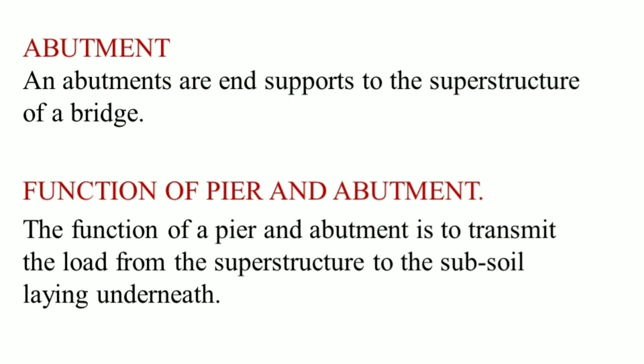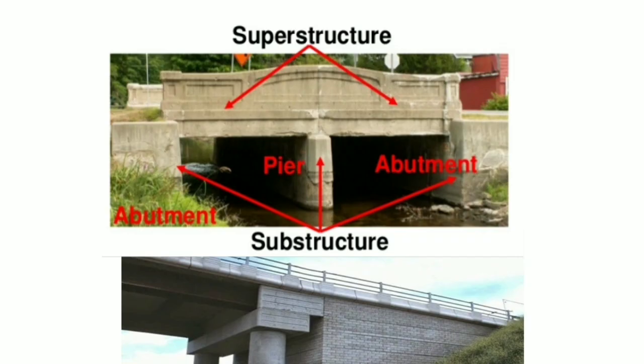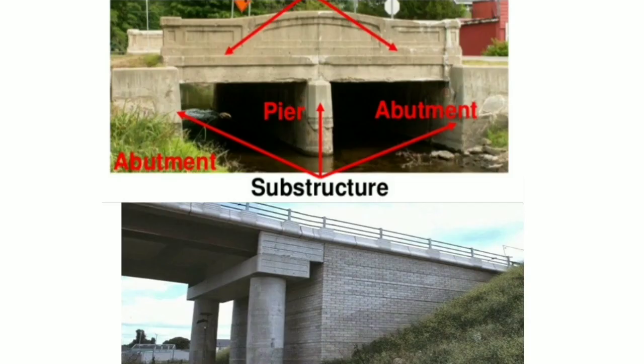The main function of a pier and an abutment is to transmit the load from the superstructure to the subsoil lying underneath. The superstructure includes the bridge deck — loads include dead load, live load, traffic load, and self weight — while the substructure includes abutments and piers.